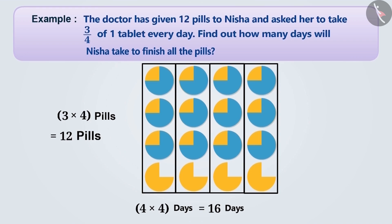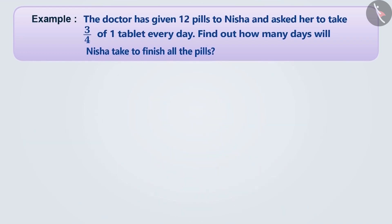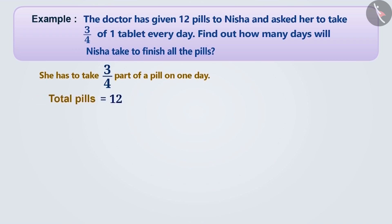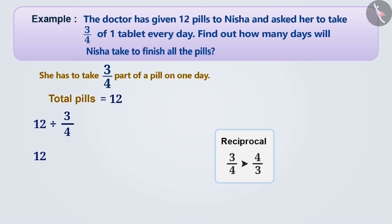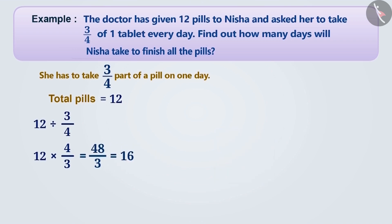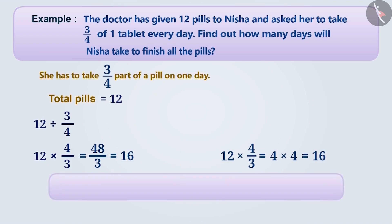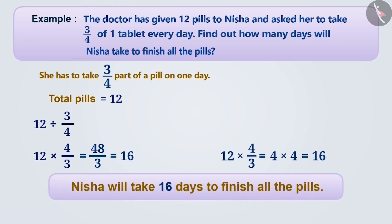Let's solve this mathematically. Nisha takes three-fourth pill in a day. The doctor has given twelve pills to Nisha. To know how many days Nisha will take to finish all the pills, we have to divide twelve by three-fourths. We will keep the first number exactly the same and multiply it by the reciprocal of the second number. The reciprocal of three by four is four by three. So twelve divided by three-fourths is equal to sixteen. Nisha will be able to finish all the pills in sixteen days.